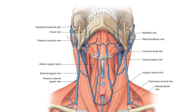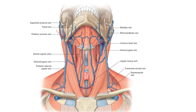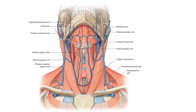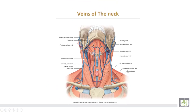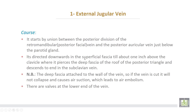The external jugular vein starts by the union between the posterior auricular vein and the posterior division of the retromandibular vein, just below the parotid gland. It is directed downwards in the superficial fascia until about one inch above the clavicle, where it pierces the deep fascia of the roof of the posterior triangle and descends to end in the subclavian vein.